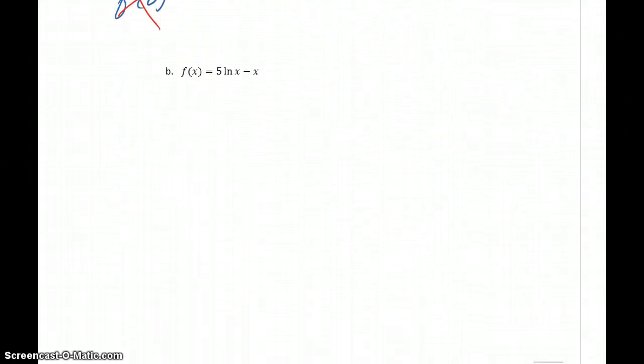Now we can look at doing exactly the same thing for part B. We'll start by finding the first derivative, which will be 5 over x minus 1. Adding those two fractions together will give us 5 minus x over x, and then setting it equal to 0. That will be equal to 0 whenever x equals 5.